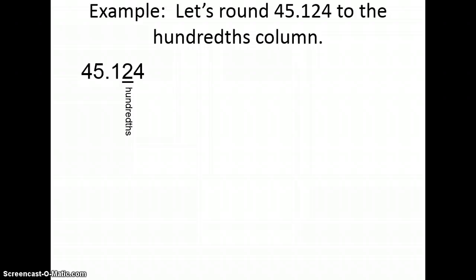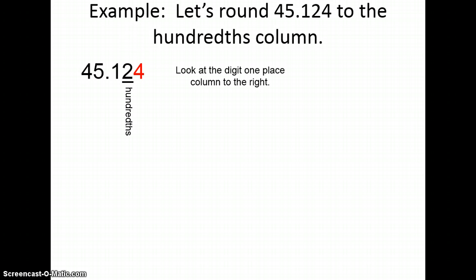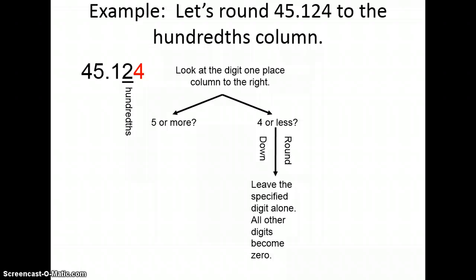Here's another example. Let's round 45 and 124 thousandths to the hundredths column. I underline the hundredths column and look one digit to the right — in this case, that's the four. I ask: is it five or more, or four or less? It's four or less, so I round down, leaving the specified digit alone and all other digits become zero. So now I have 45 and 12 hundredths — I don't need to write the zero or any digit that comes after it.